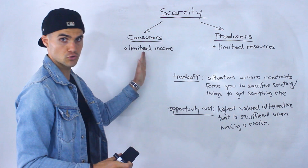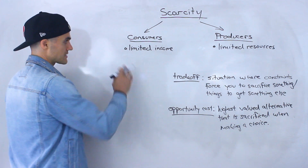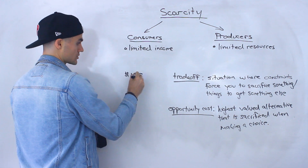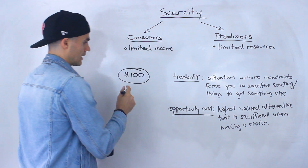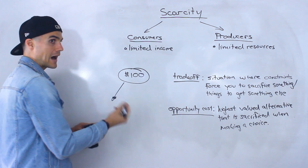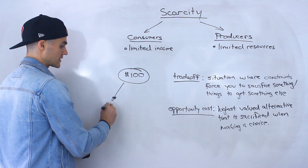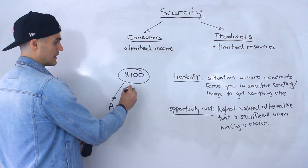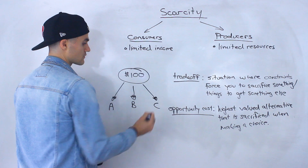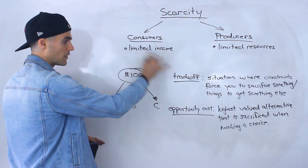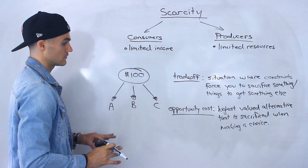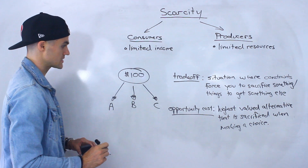Let's pretend that we're a consumer and we have a limited amount of income — let's say we have a hundred dollars. What can we do with that hundred dollars? Well, let's say we can buy good or service A, good or service B, or good or service C. There are going to be a bunch of things we could do with a hundred dollars, but let's keep it to these three for simplicity.